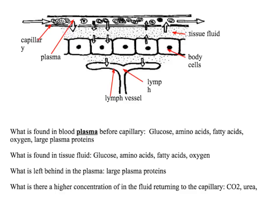Tissue fluid is forced out at the arterial end, and tissue fluid is reabsorbed at the venule end. A very negative water potential in the capillary brings water back in by osmosis at the venule end. What creates that really negative water potential in the capillary is the fact that large plasma proteins are too big to pass through the capillary wall, so they remain inside the capillary and lower the water potential.